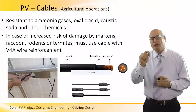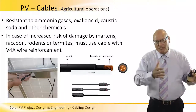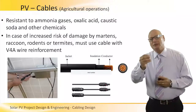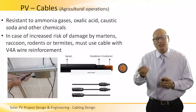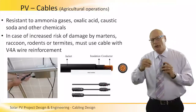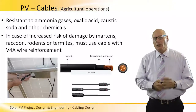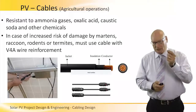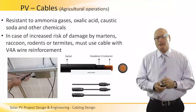Especially in agricultural operations, when we have PV systems in agricultural land, the cables should withstand and resist ammonia gases, oxalic acid, caustic soda, and all other chemicals in agricultural areas. Also, they should withstand damages that can be created by various animals.